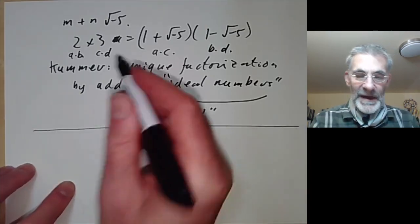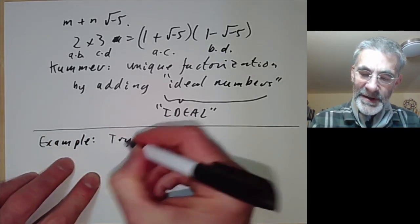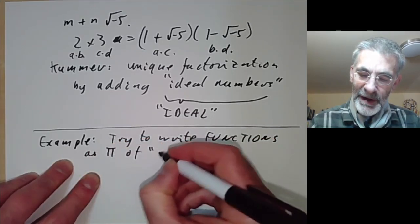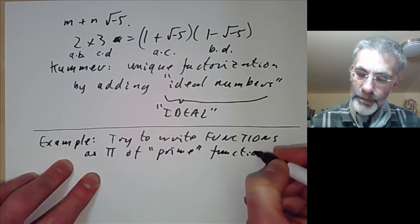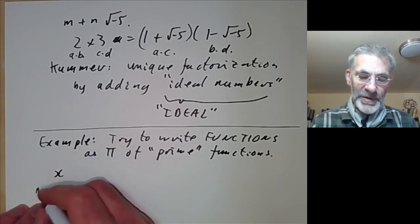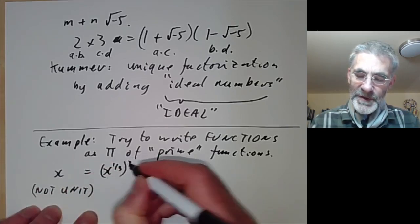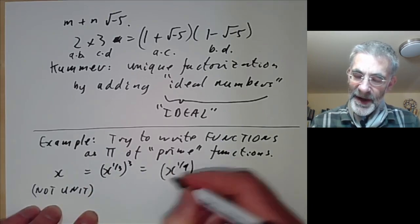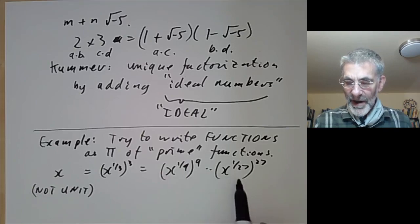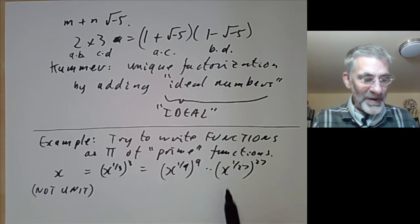Another example where you don't get unique factorization into primes is if you try to write general functions as a product of prime functions. This just doesn't work for arbitrary functions. For instance the function x is not a unit because it vanishes somewhere, but x equals (x^(1/3))^3 equals (x^(1/9))^9 and so on — you can keep subdividing it into smaller and smaller functions and can never find prime functions to write it as a product of.